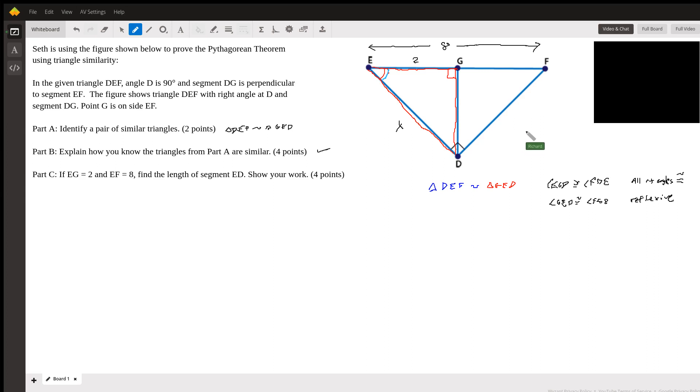Now when you write the similarity statement, you want to be very careful with it. Make sure that you have the angles that are corresponding to each other. So for example, D in the blue triangle corresponds to G in the red triangle, and then of course E in the blue triangle corresponds to E in the red triangle, and then you're left with D and F.